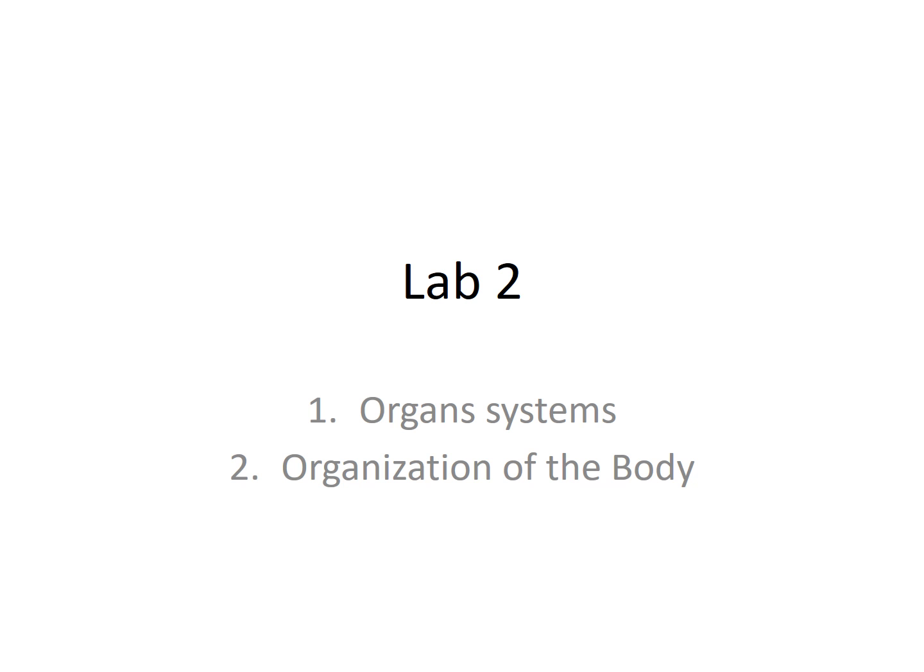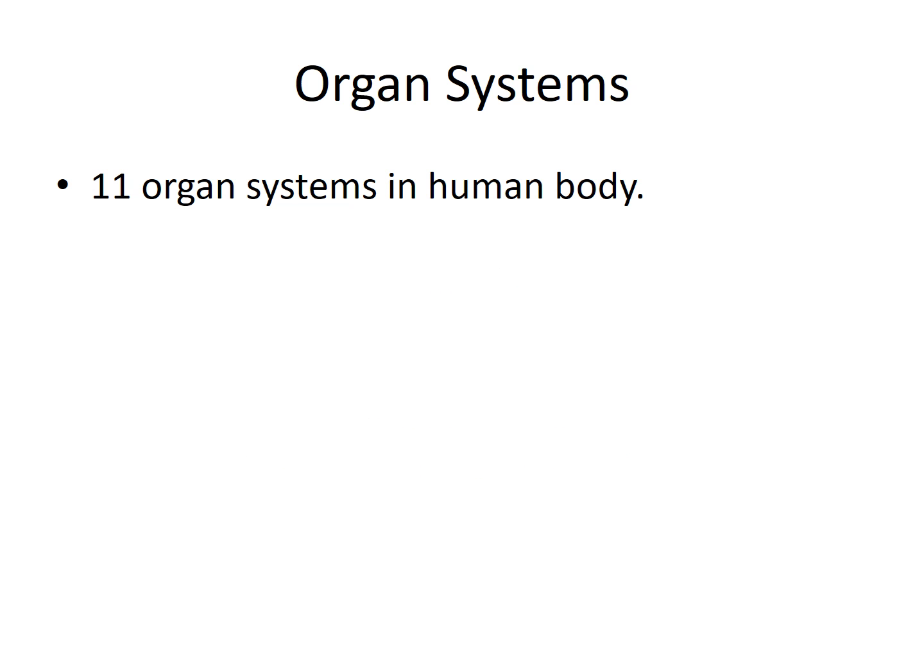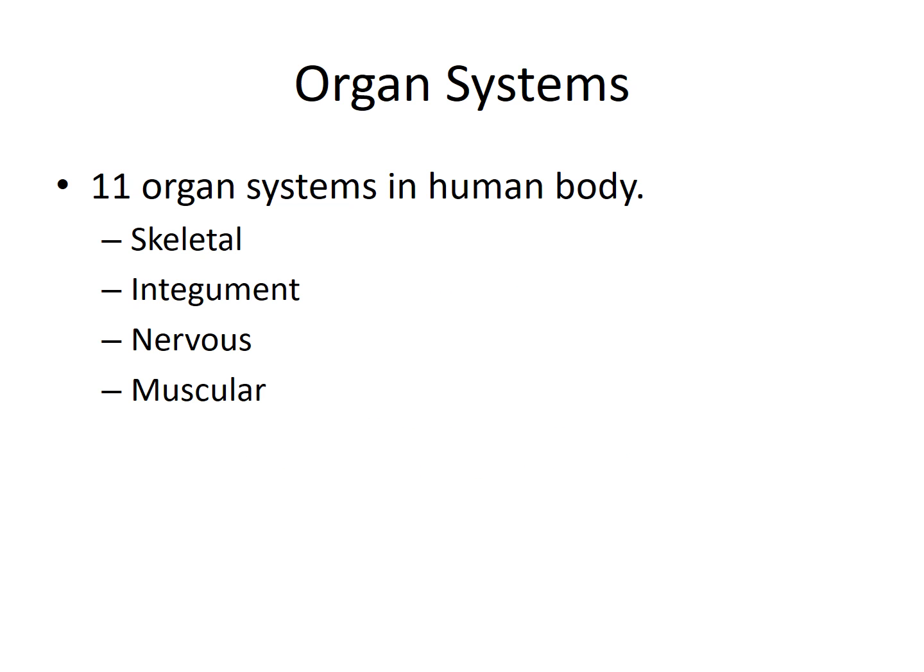Welcome to Anatomy and Physiology Lab. This is lab two. In this lab we're going to be discussing the organ systems and then we will also be discussing the organization of the human body. There are 11 organ systems in the human body but in this lab we'll be discussing four of them.